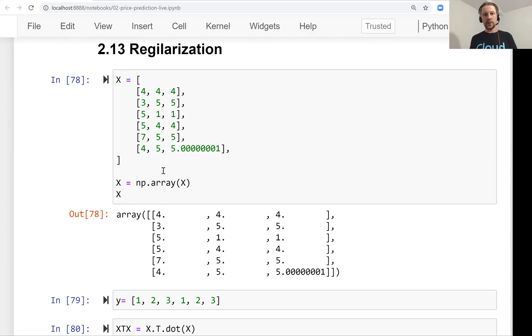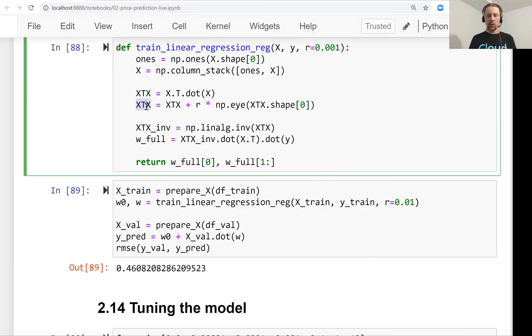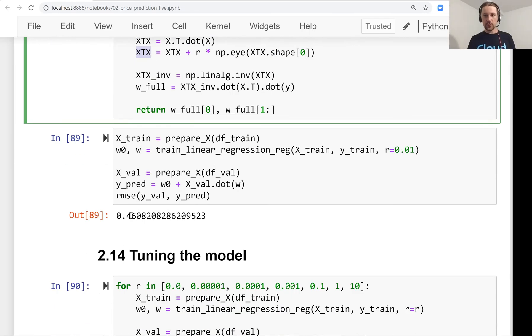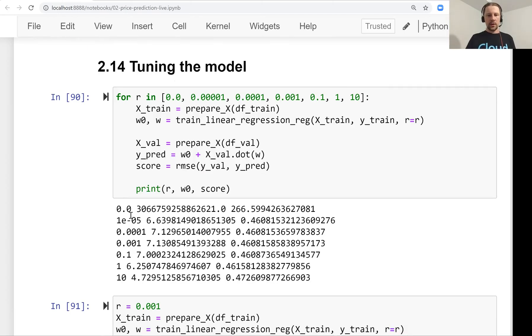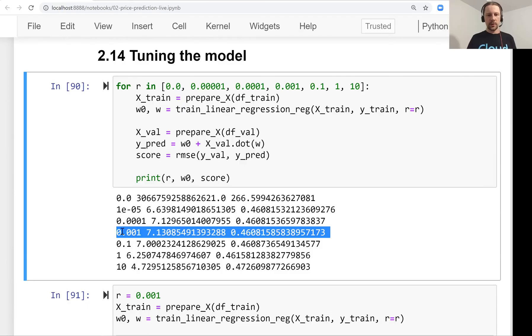As a way to solve this numerical instability, we used regularization. We added a small number to the diagonal of this matrix X transpose X before inverting it, which helped us. We noticed the performance of our model after including all these categorical features increased quite a lot compared to the previous version. After that, we tried different values of regularization parameter to find out what is the best one, and we concluded that 0.001 seems like maybe it's not the best, but it's on the same level as others, so we decided to go with this.